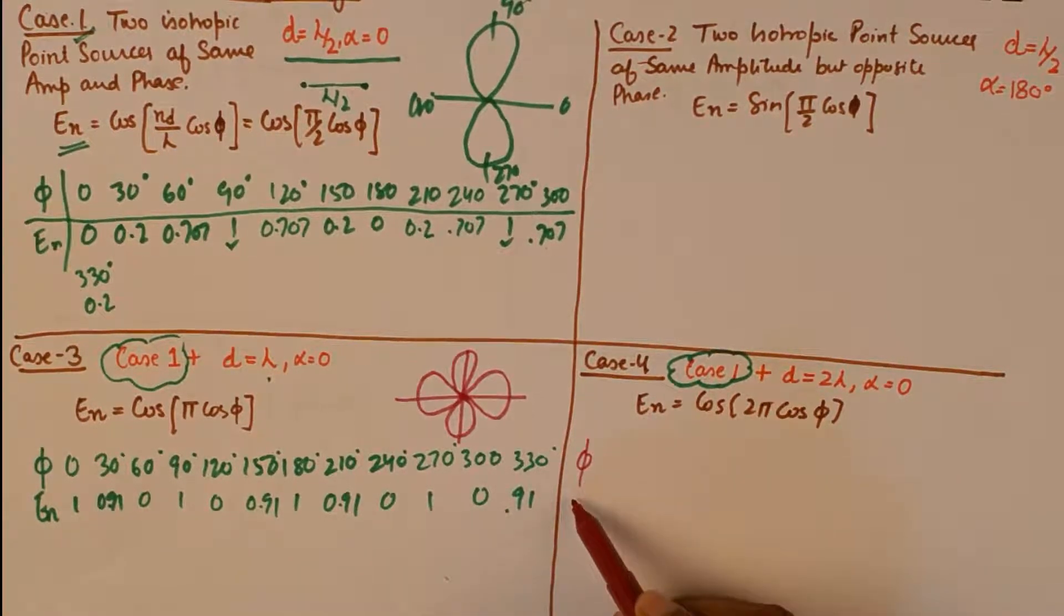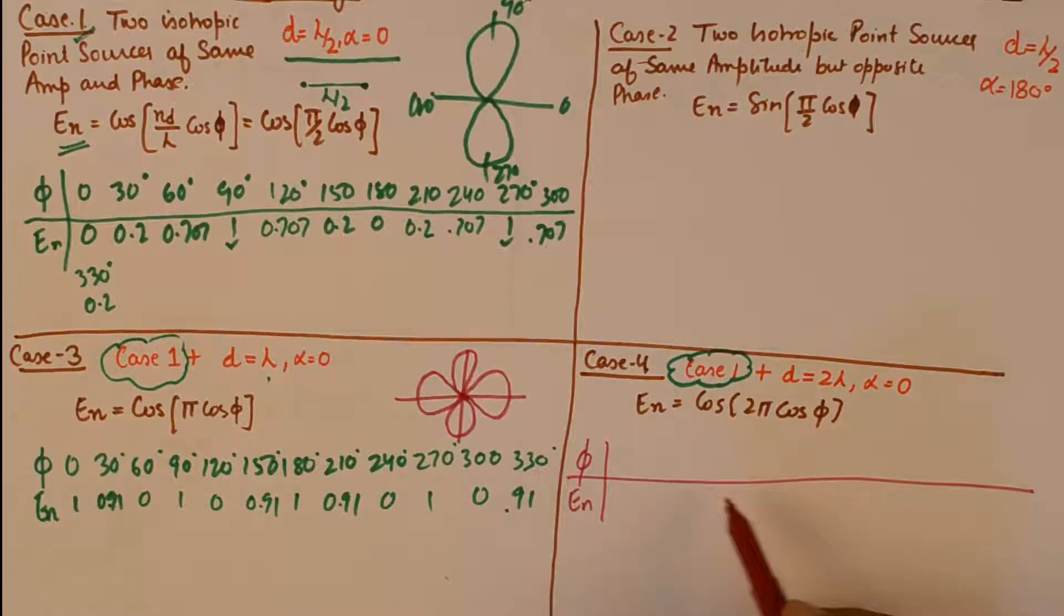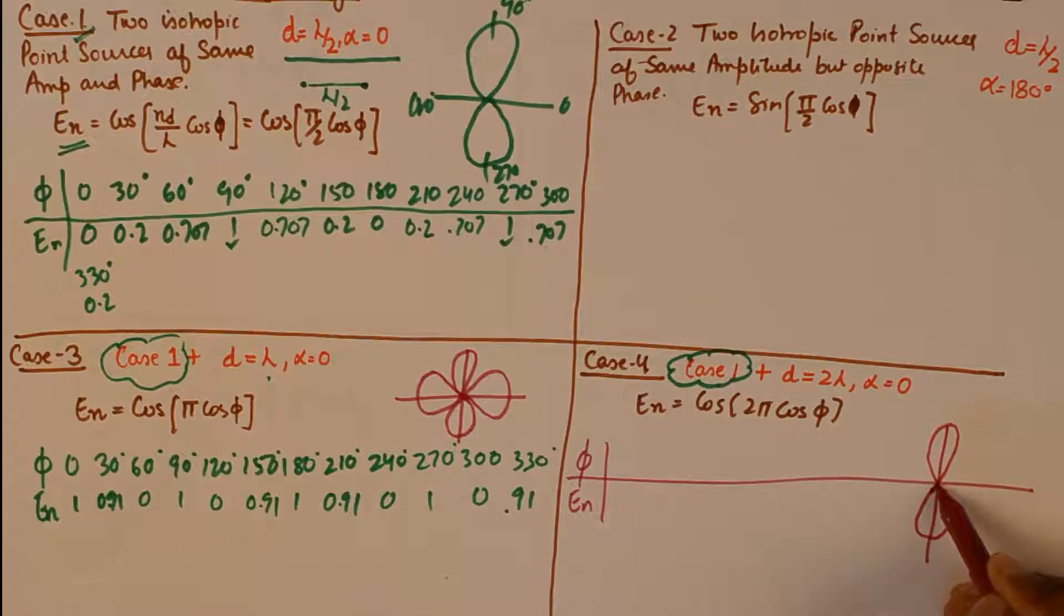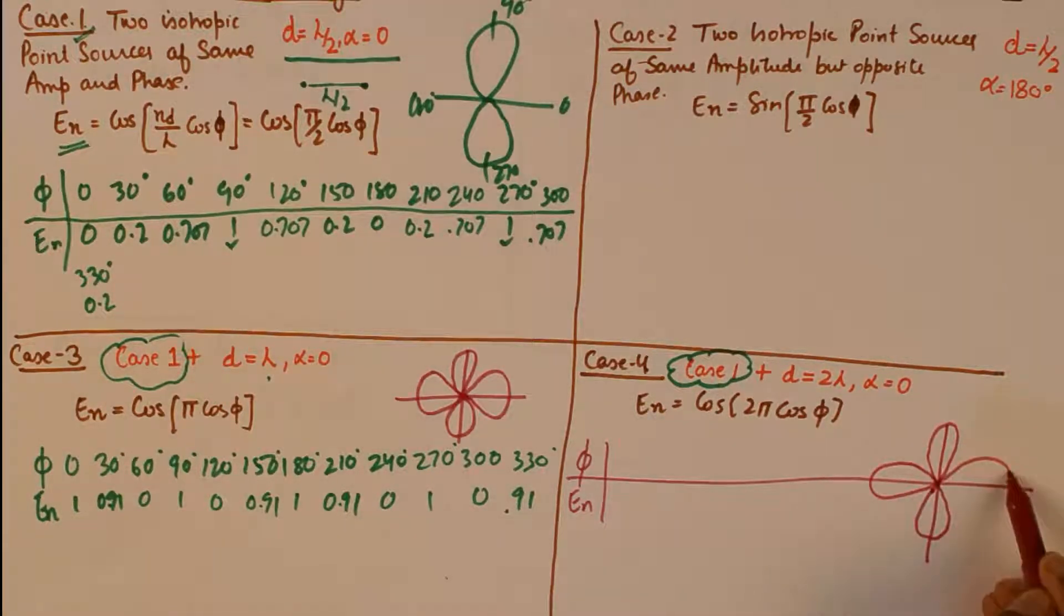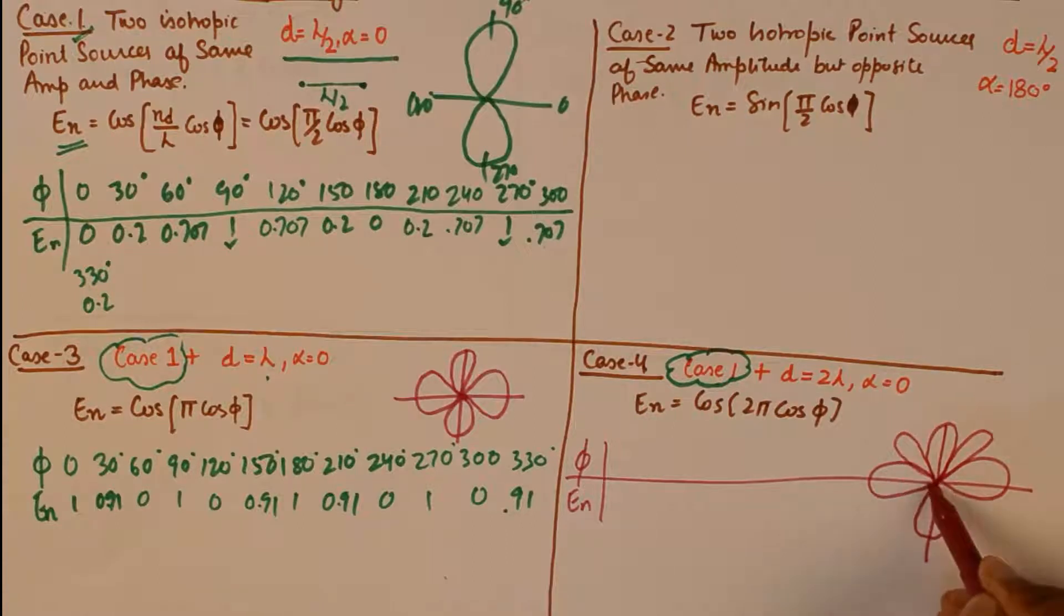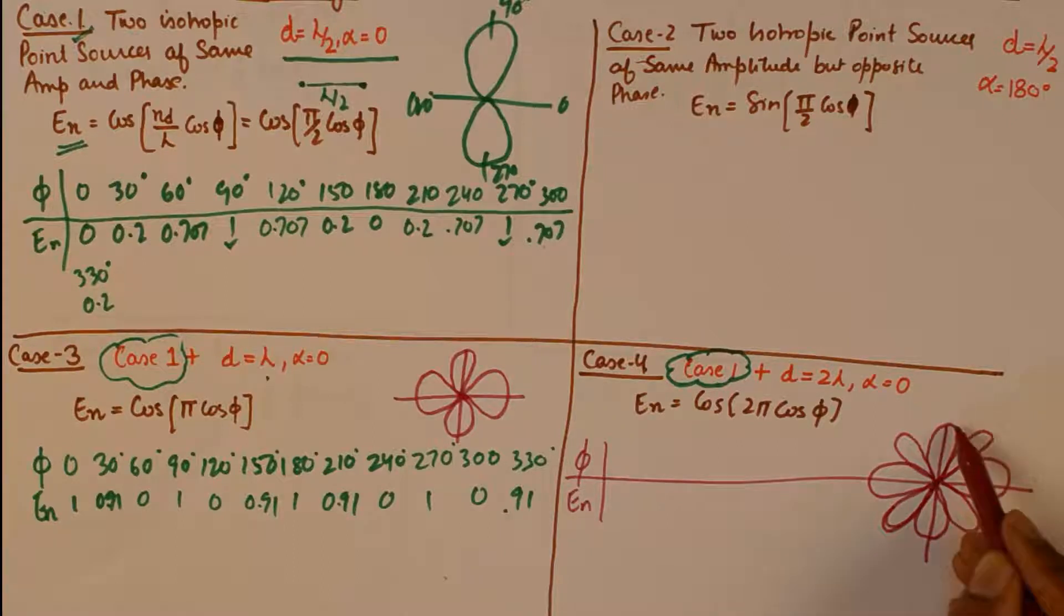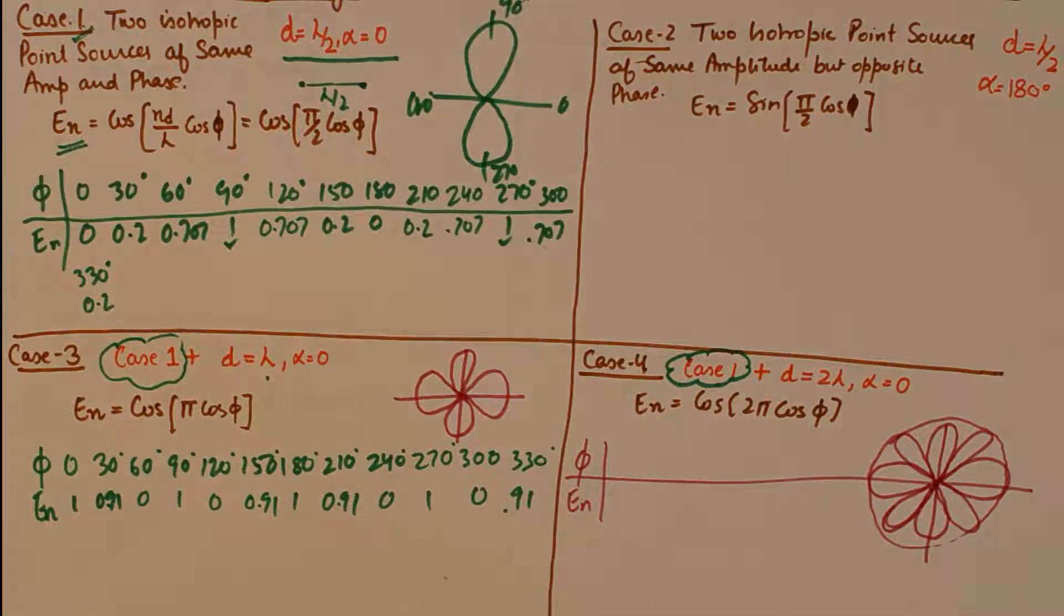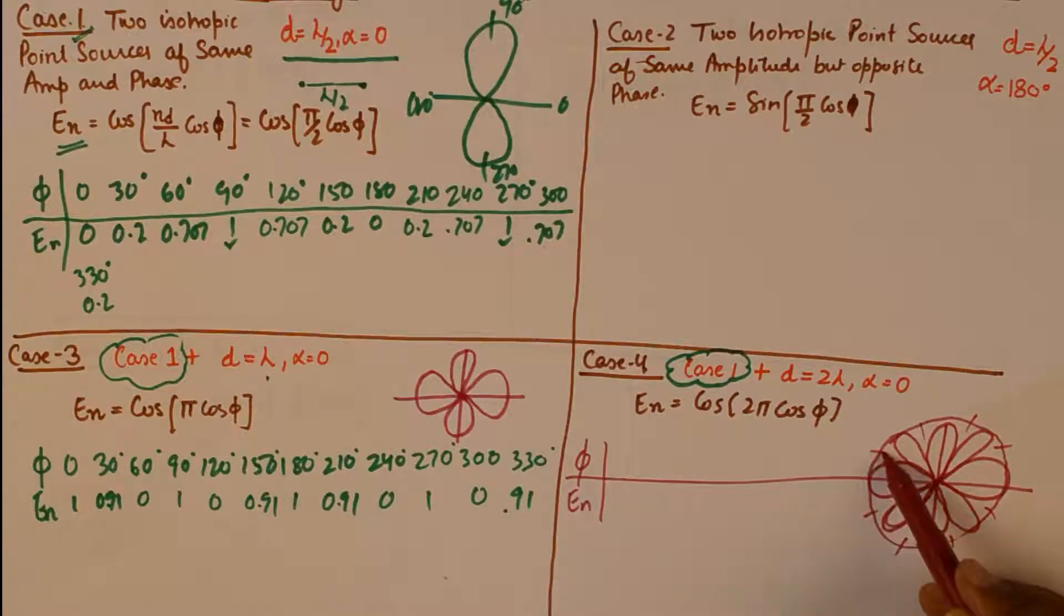So if we plot phi versus En, I will not write down the values here, this could be you could take this as an assignment, but I will draw the radiation pattern for sure. The radiation pattern looks something like this. It has more number of maxima in vivid directions, so you will find, please understand this is not a side lobe, all these are points of maxima. So the maxima occurring at so many locations, and similarly nulls are occurring at many many locations.